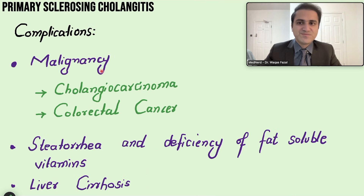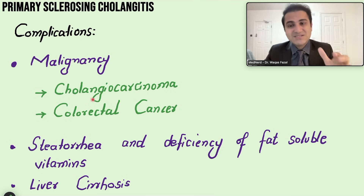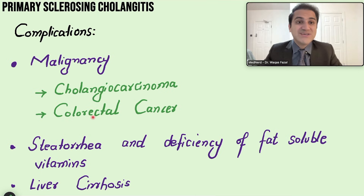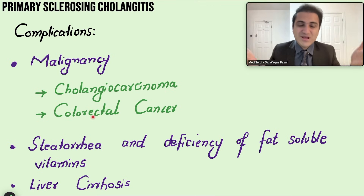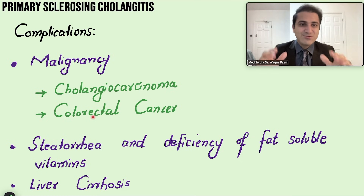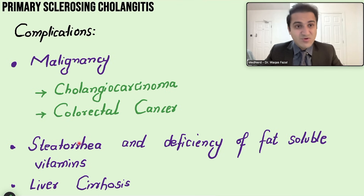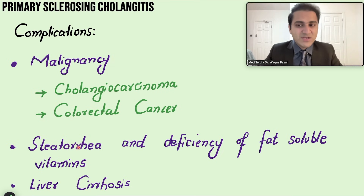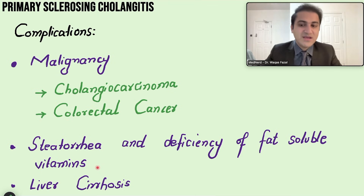Complications of PSC include malignancy — particularly cholangiocarcinoma, driven by chronic inflammation in the bile ducts. Patients are also at increased risk of colorectal cancer because 90% have underlying inflammatory bowel disease. Steatorrhea occurs because bile cannot emulsify fats, leading to fat-soluble vitamin deficiencies (A, D, E, K) and eventually liver cirrhosis.